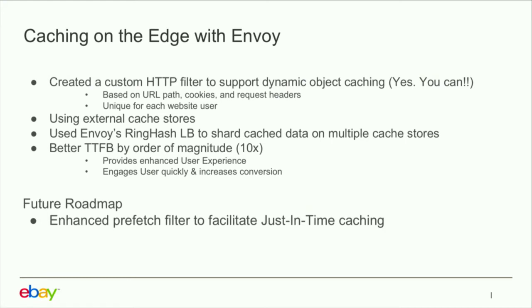Now I'll talk about what you can do on top of Envoy when running it on the edge. We created a new filter that does dynamic caching. Dynamic as in — for a page with content specific to a geography, like showing a German customer content in their local currency — we can cache based on path, specific query, or specific user. We did not have the cache stores inside Envoy itself, but used ATS or other external cache stores.